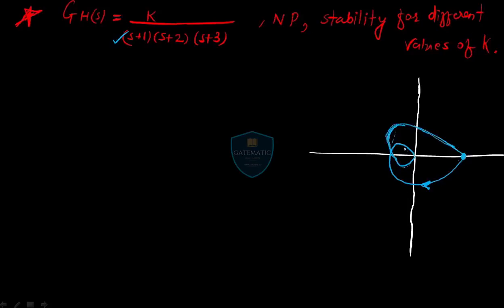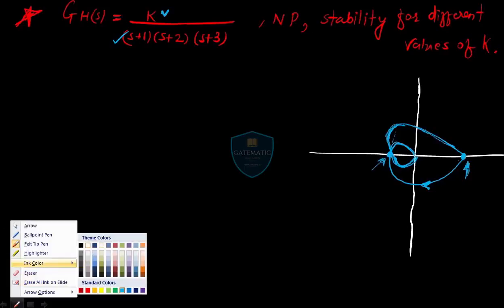This is the Nyquist plot. Now, one thing — this point we need to calculate because it will be in the form of k. So let's find out the magnitude so we can give the exact magnitude of these two points, since these two points are related to the k value.